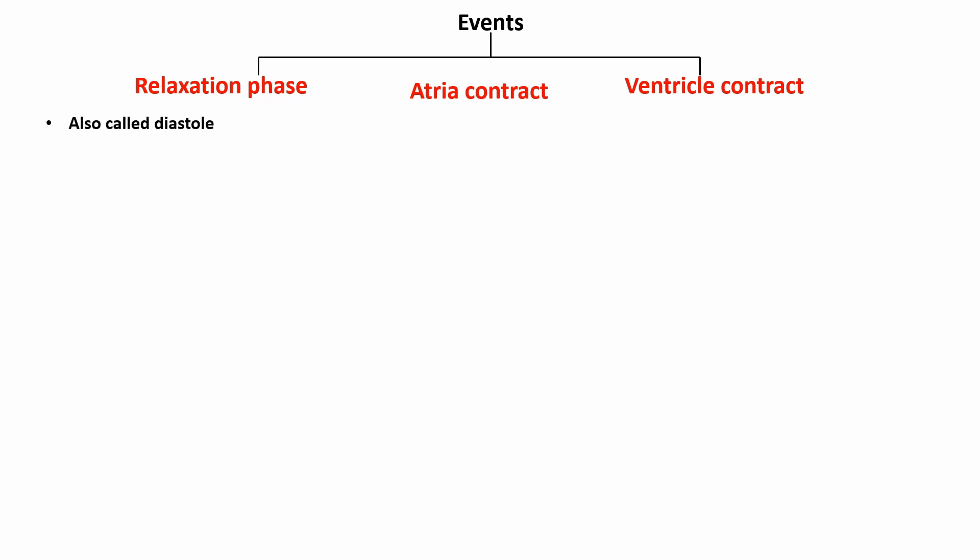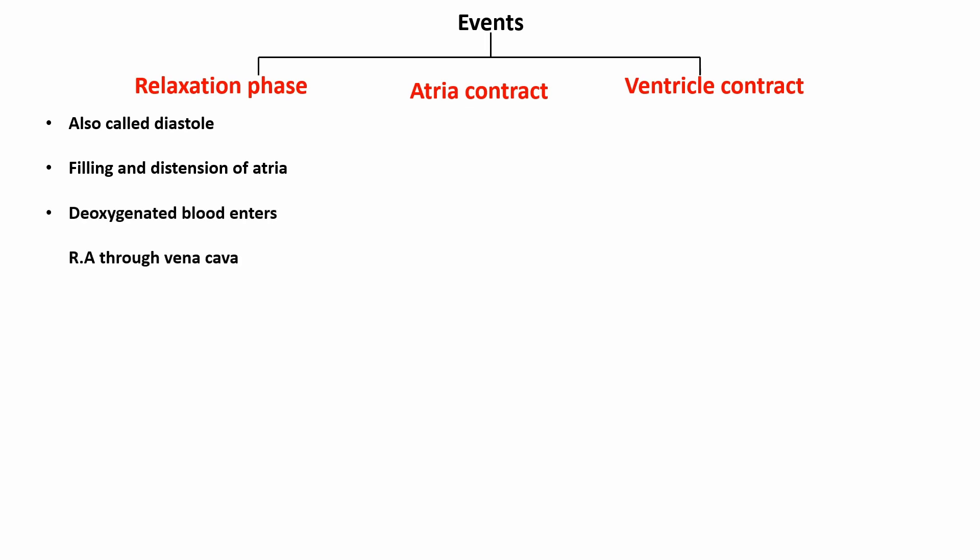The relaxation phase is also called diastole, involving filling and distension of the atria. Blood fills the left and right atrium during this phase.